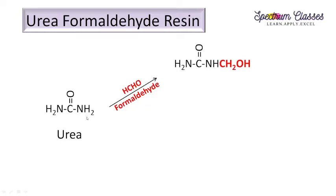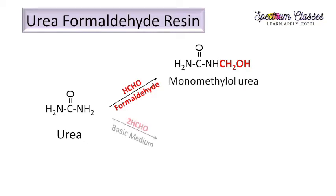Initially it is NH2, and on reaction with formaldehyde we get NH — one H is attached to this O. So we have CH2O, CH2O, and this H comes here, giving us CH2OH. If we have the ratio of urea to formaldehyde higher than 1:1, then we get this type of product.